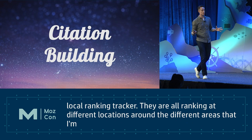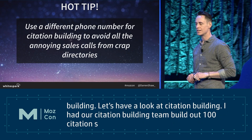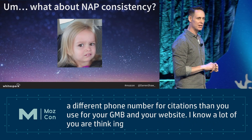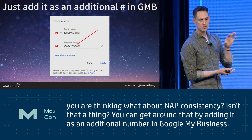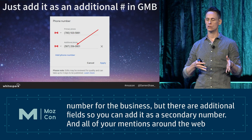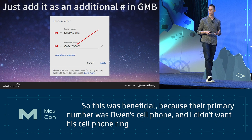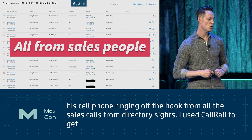The next thing was citation building. I had our team build out 100 citations. Here's an interesting tip: use a different phone number for citations than you use for your GMB and website. I know you're thinking about NAP consistency - you can get around that by adding it as an additional number in Google My Business. The primary number stays the actual business number, but all citations are linked as a secondary. This was beneficial because I didn't want Owen's cell phone ringing from directory site sales calls - and indeed, out of 18 calls, they were all salespeople.